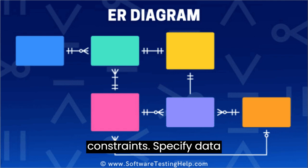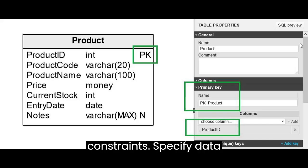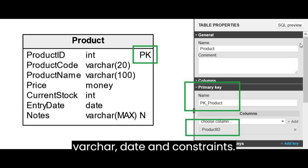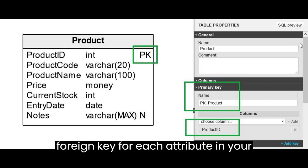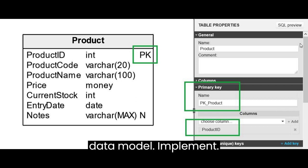Data types and constraints. Specify data types, for example integer, varchar, date, and constraints, for example unique, primary key, foreign key, for each attribute in your data model.